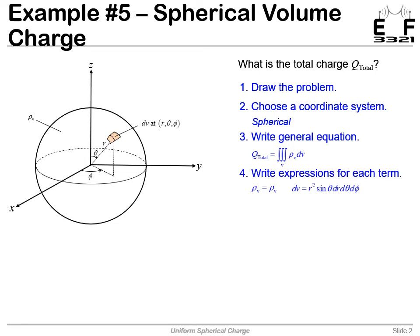Now we write expressions for each of these terms, and this is where we have to get a little bit deeper into the spherical coordinates. Our charge density is just a constant, so rho v stays rho v. But our differential volume in spherical coordinates is actually r squared, and that's because this differential volume actually gets larger with radius as we go outward.